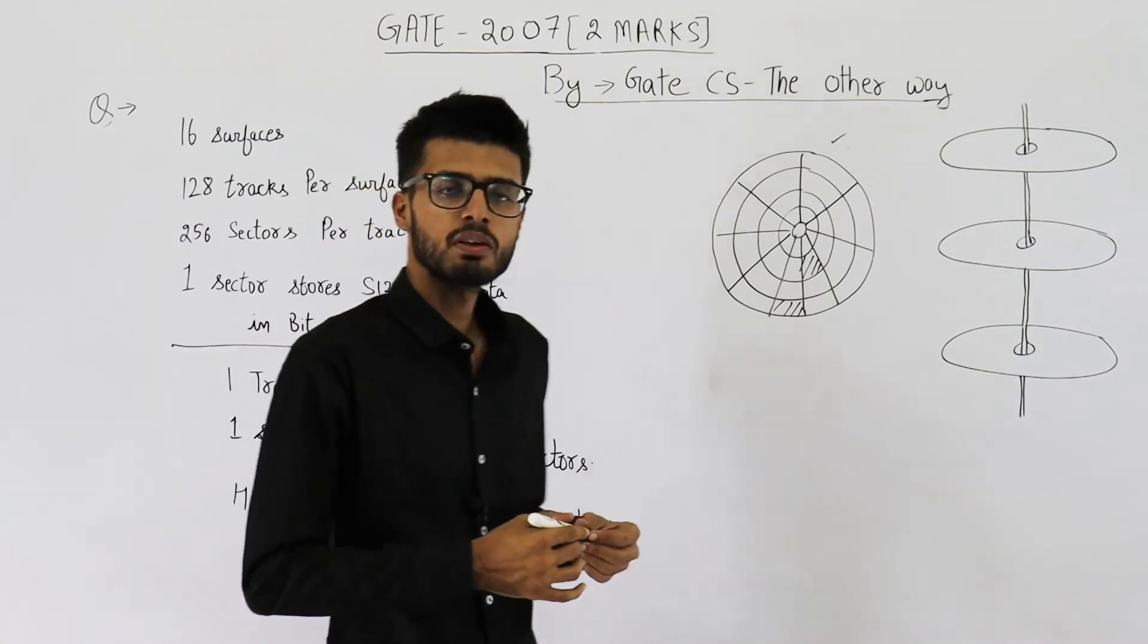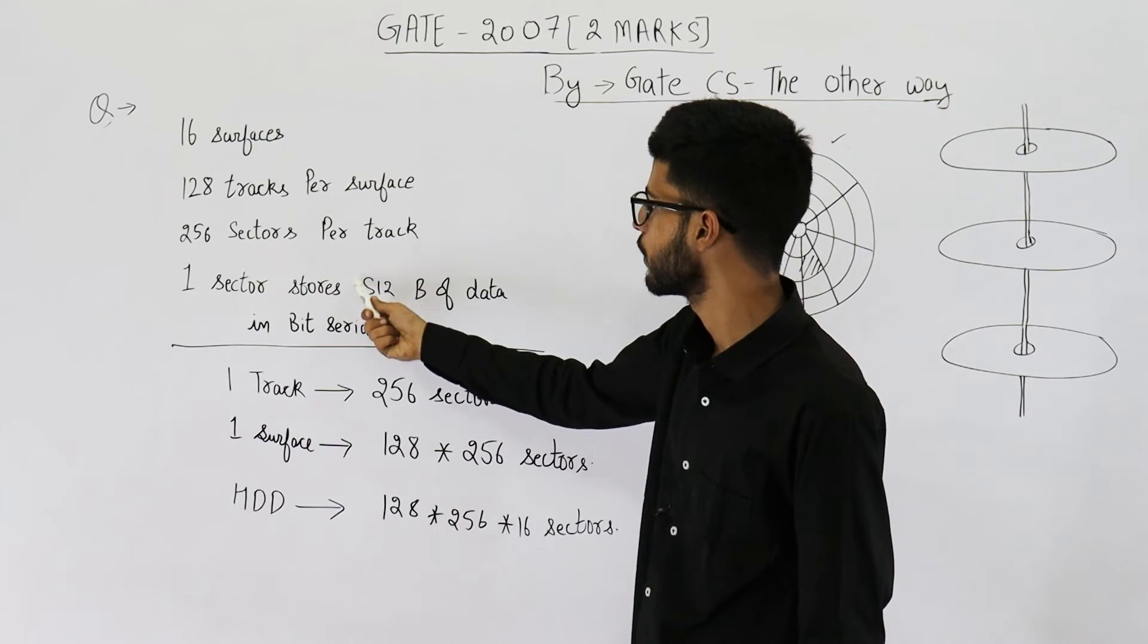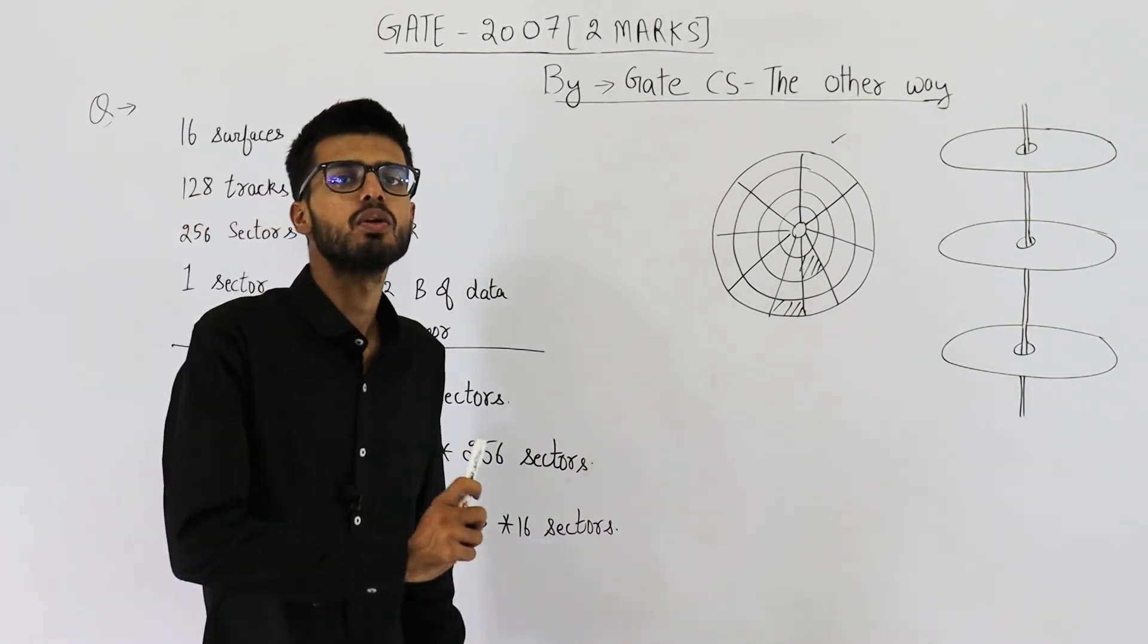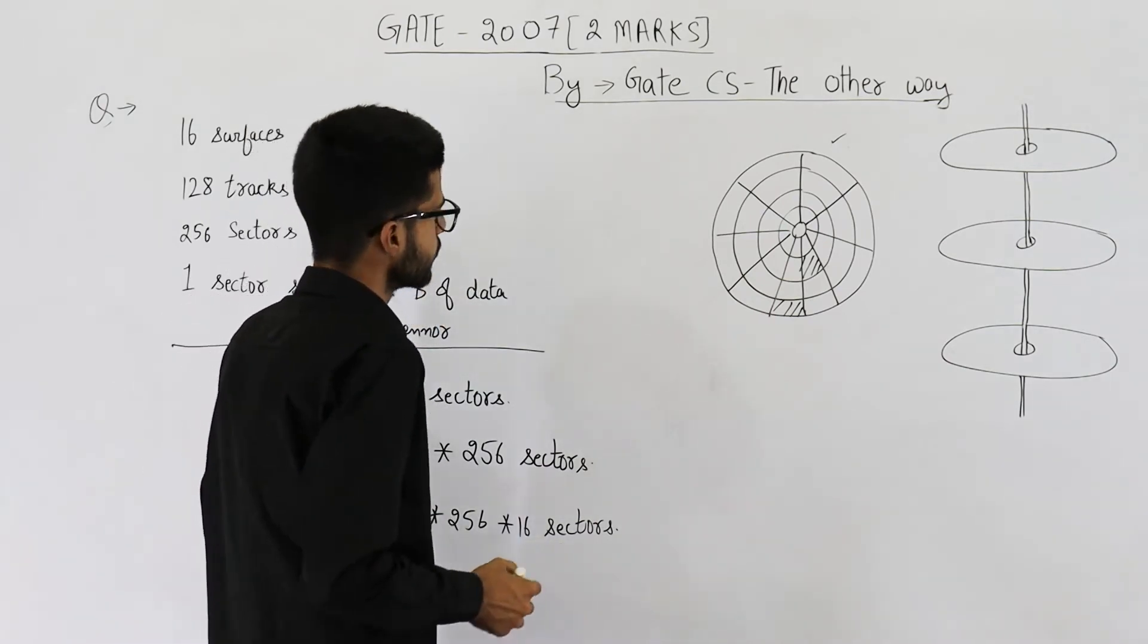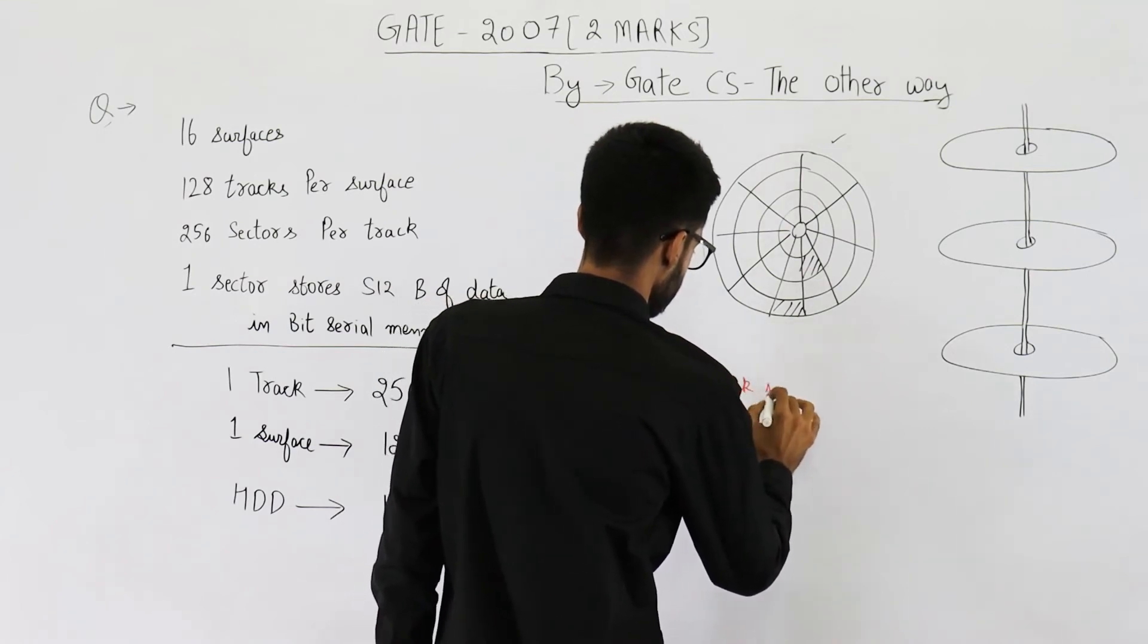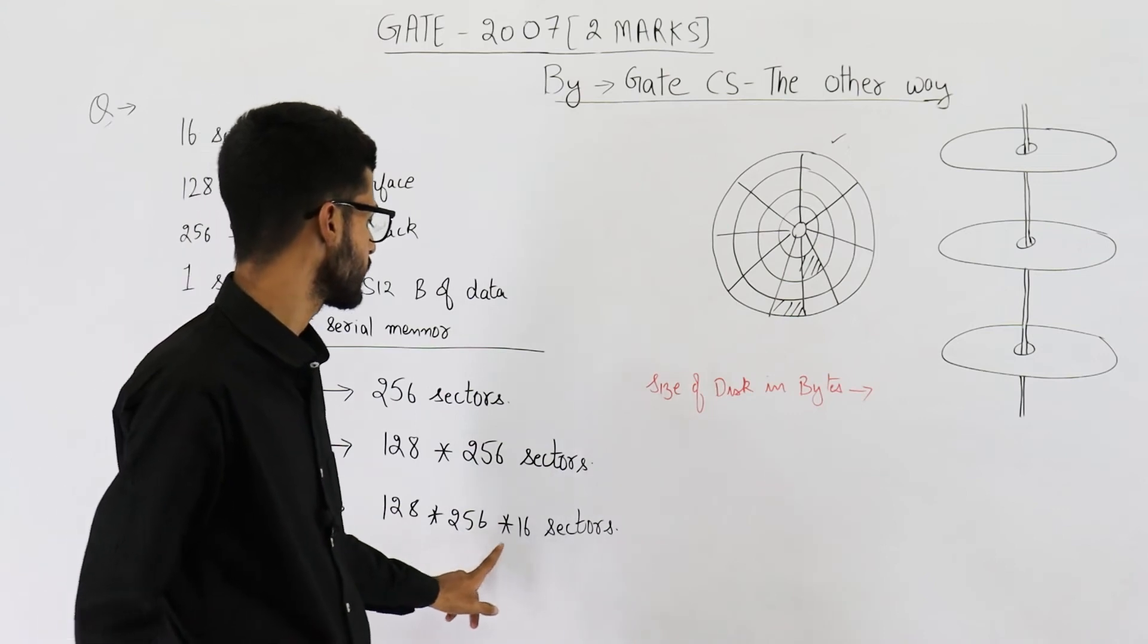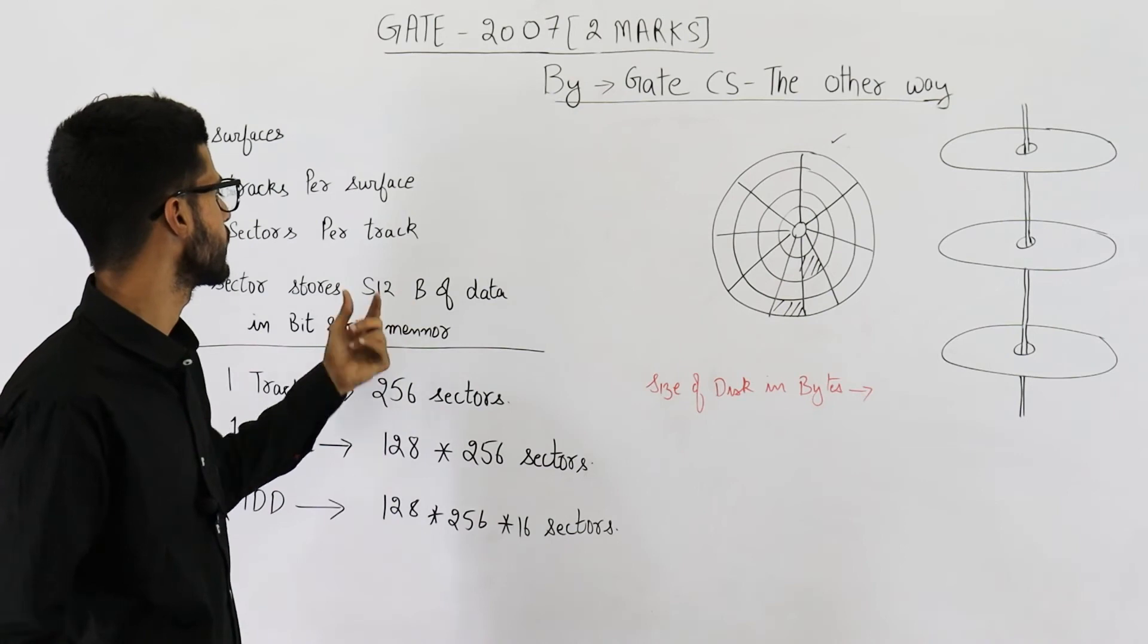Now, you know the total number of sectors in this disk. Size of one sector is given as 512 bytes. What will be the total size of disk in bytes? This number multiplied by 512 bytes. So let's solve it. This comes out to be 128 into 256 into 16 multiplied by 512.